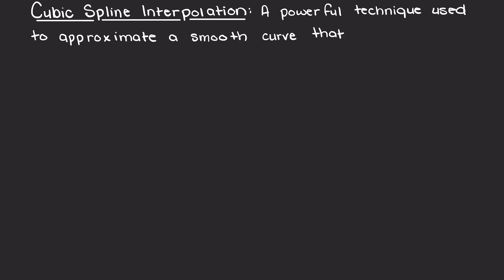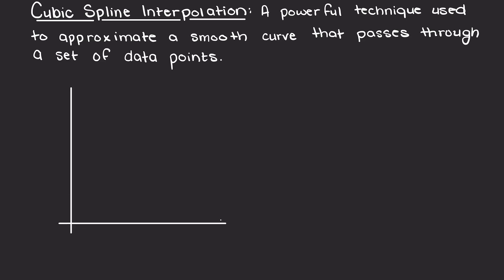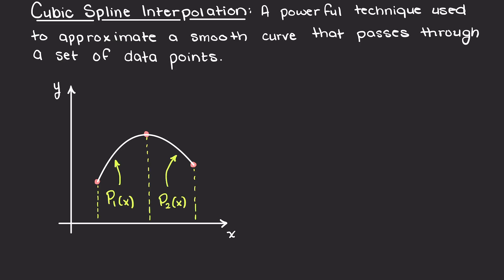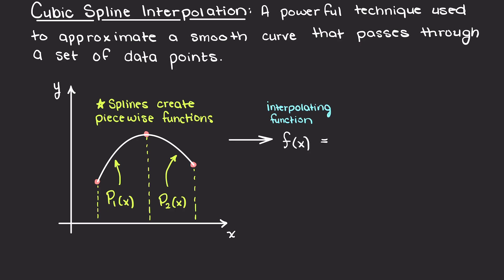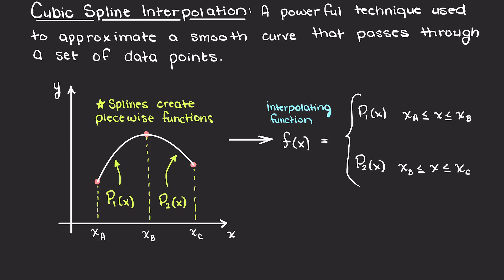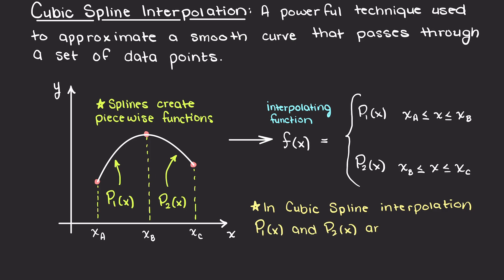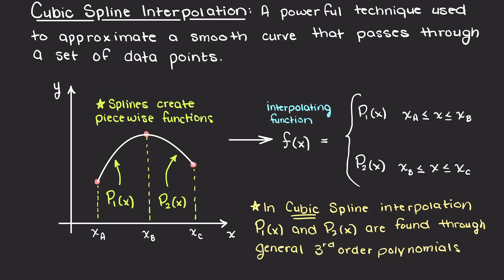Cubic spline interpolation is a powerful technique used to approximate a smooth curve that passes through a set of data points. Similar to the linear and quadratic splines that we have talked about in our past few videos, it breaks down the data range into smaller segments. However, we are now going to fit a cubic polynomial to each section, and this ensures continuity and smoothness at the connection points, which is something we were lacking in both the linear and quadratic splines.